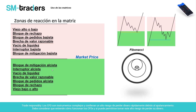Luego viene el interruptor, que es muy parecido al bloque de mitigación. Vamos a ver la diferencia entre un interruptor y un bloque de mitigación. Los bloques que ya conoces del webinar de Trading Institucional incluyen el bloque de propulsión, que es un bloque de orden institucional capitalizado. En la parte superior, después del 50%, empieza lo mismo pero al contrario: bloque de mitigación, interruptor, vacíos de liquidez, brechas de valor razonable, bloque de pedidos bajista para capitalizar, bloque de rechazo, y el viejo alto que reposa por encima del máximo. Todo esto ocurre en el Price Action.